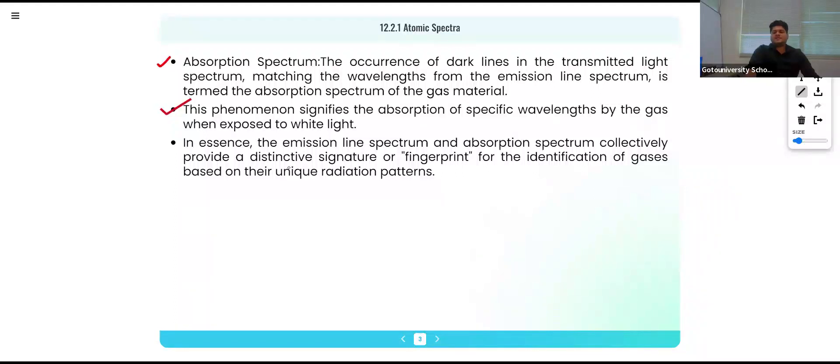In essence, the emission line spectrum and the absorption spectrum collectively provide a distinctive signature or fingerprint for the identification of gases based on their unique radiation pattern.